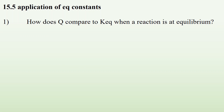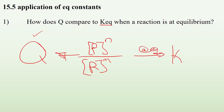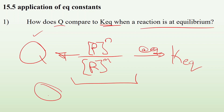Number one: how does Q compare to Keq when a reaction is at equilibrium? The Keq expression is always products to whatever their coefficients are over reactants concentrations to whatever their coefficients are. Q is calculated at any conditions — just plug in those concentration values. When the system is at equilibrium, Q equals Keq, so they end up being the same number.